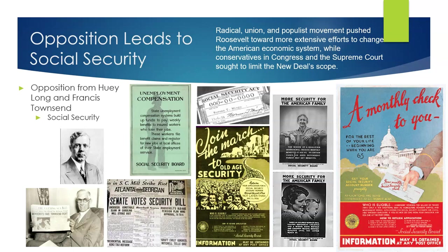Although Townshend's plan was not passed as he proposed, it would form the basis for the Social Security Act in 1935. This landmark legislation established a federal insurance program that operated on the automatic collection of taxes from both employees and employers. These taxes were deducted from wages as they were issued, ensuring continuous funds rather than waiting until the end of the tax season. The Social Security Trust Fund would be used to make monthly payments to retired persons over the age of 65. Also receiving benefits were workers who had lost their jobs, persons who were blind or otherwise disabled, and dependent children and their mothers.